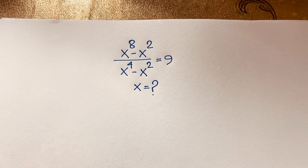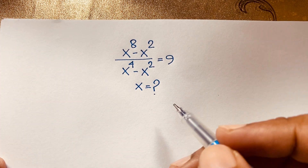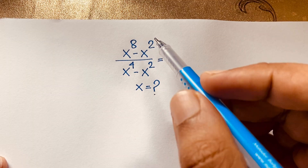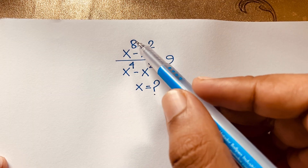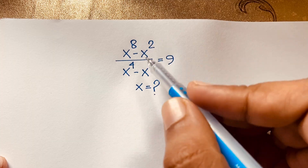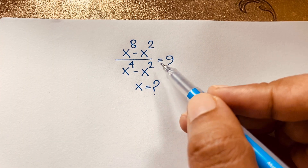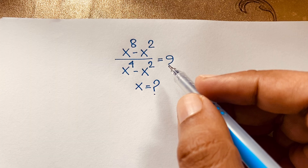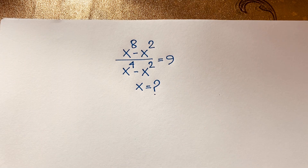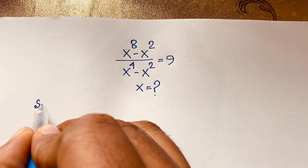Hello everyone, welcome to Rasha's classroom. Today we are solving an interesting viral math Olympiad question: x to the power 8 minus x squared, over x to the power 4 minus x squared, is equal to 9. What is x? I solved this question using an easy method. This is our math solution.